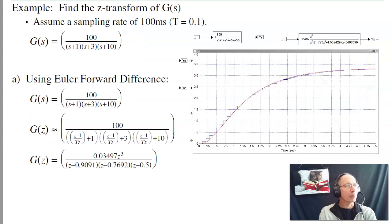For example, find the Z-transform of this system. I've got poles at -1, -3, -10. Think of a three-stage RC filter or heat equation. This system has a DC gain of 3.3333 and 3 poles.